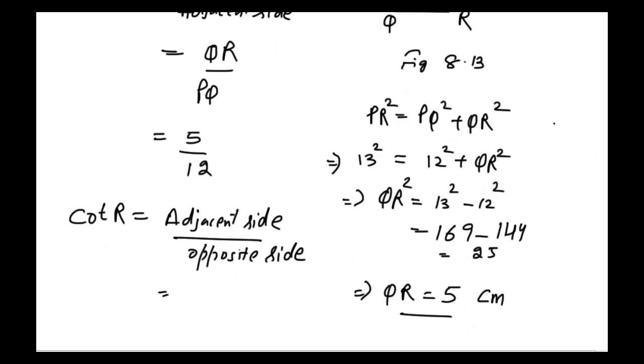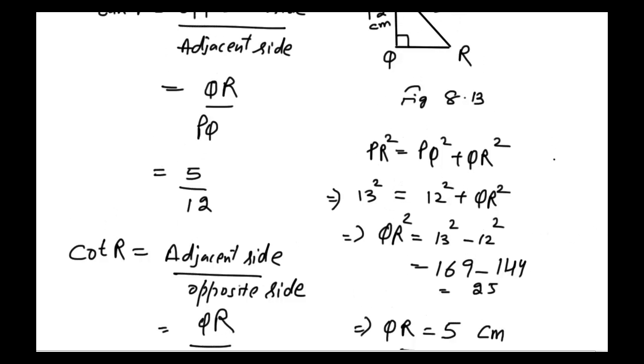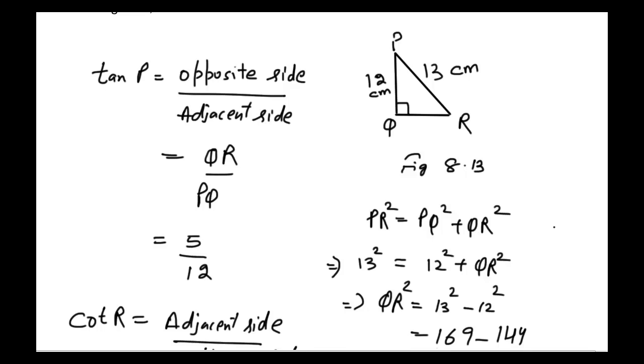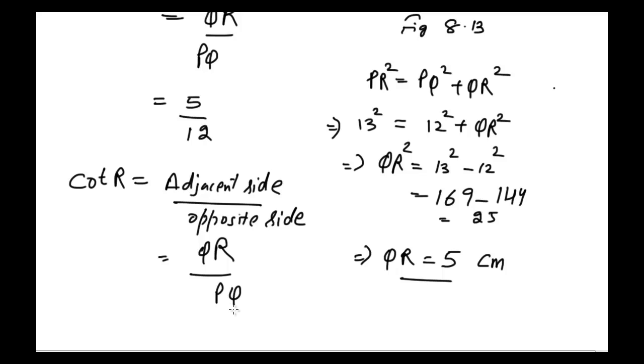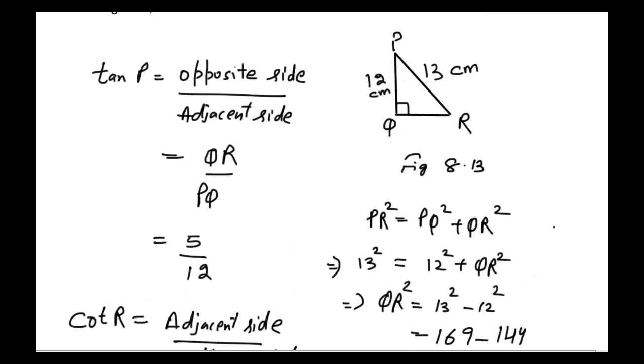And opposite side to angle R is PQ. So we get here 5 divided by 12 again. Now we need to find the value of tan P minus cot R.